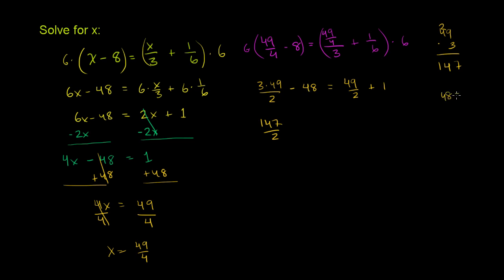So 147. So this is 147 over 2. And then let's put this over a denominator of 2. So 48 is equal to 96 over 2, right? 96 divided by 2 is 48. I just multiplied this by 2. So this is minus 96 over 2.